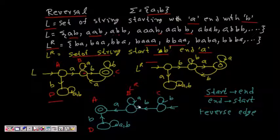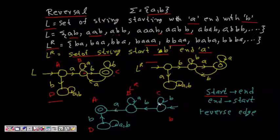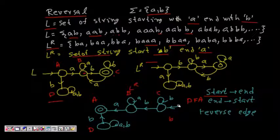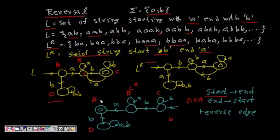When edges are reversed, the symbol labels remain the same. For example, a transition from b-a to b becomes b to a in the reversed DFA. The resulting automaton accepts strings starting with 'b' and ending with 'a', which is correct. However, notice that reversing the DFA this way produces an NFA, not necessarily a DFA, because a state may have multiple outgoing transitions for the same symbol. As an exercise, consider what happens when the original DFA has more than one final state.